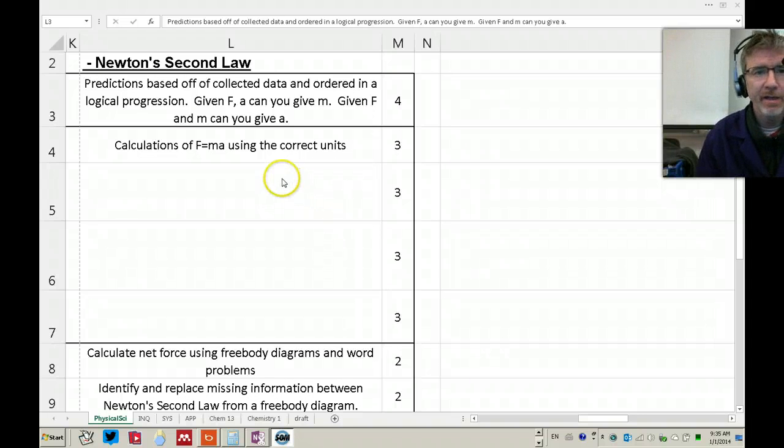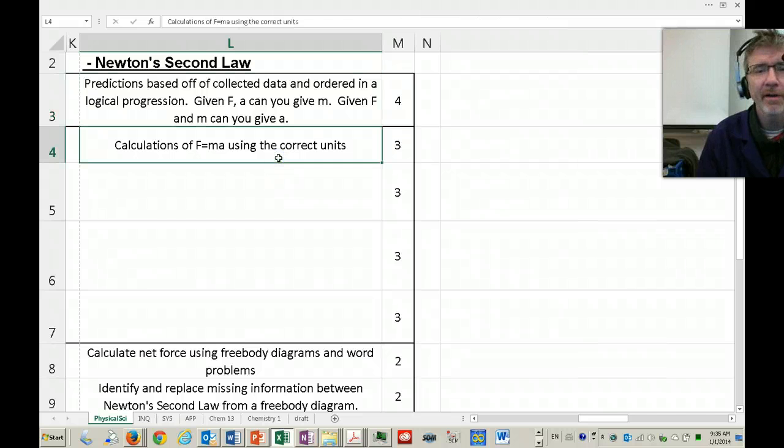Now level 3. You need to be able to calculate the force given the mass and the acceleration. So you just multiply the two. That's what it takes for level 3.0 proficiency in this standard, Newton's Second Law.